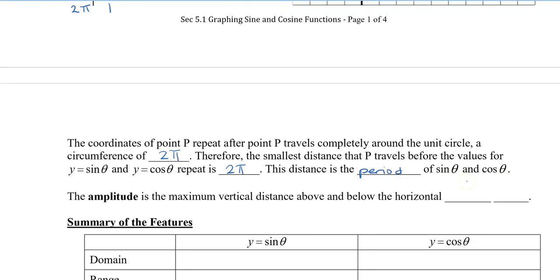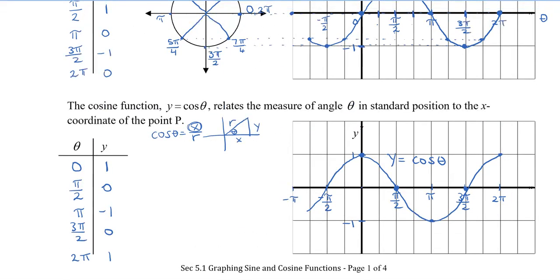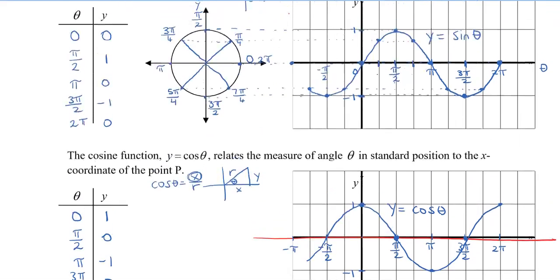The amplitude is the maximum vertical distance above and below the horizontal central axis. That central axis is this line drawn straight across. The amplitude is the distance from this central axis to our maximum point — which is a distance of 1. From the central axis to the minimum is also a distance of 1. The cosine graph similarly has an amplitude of 1 in both directions.